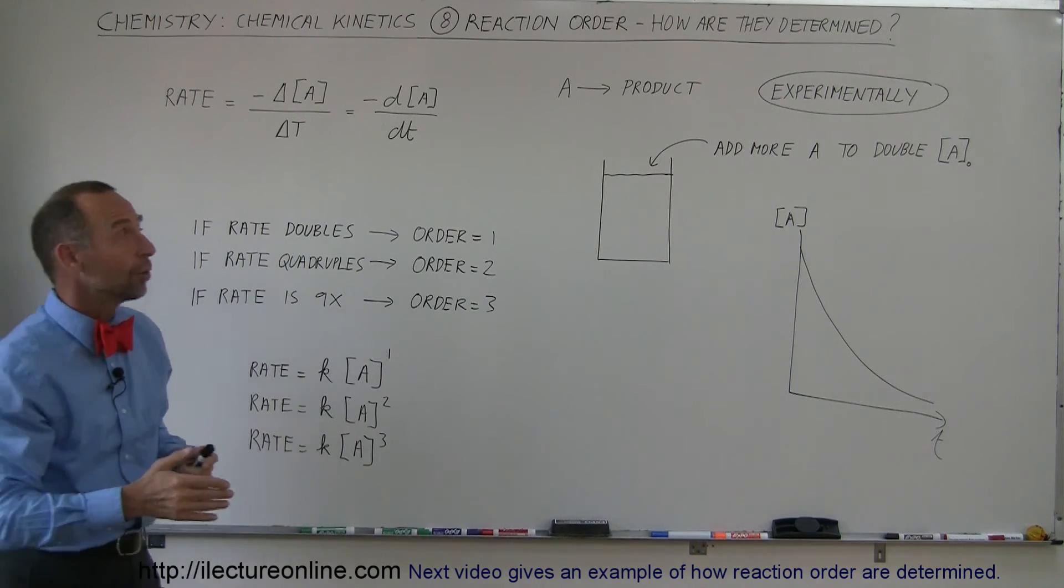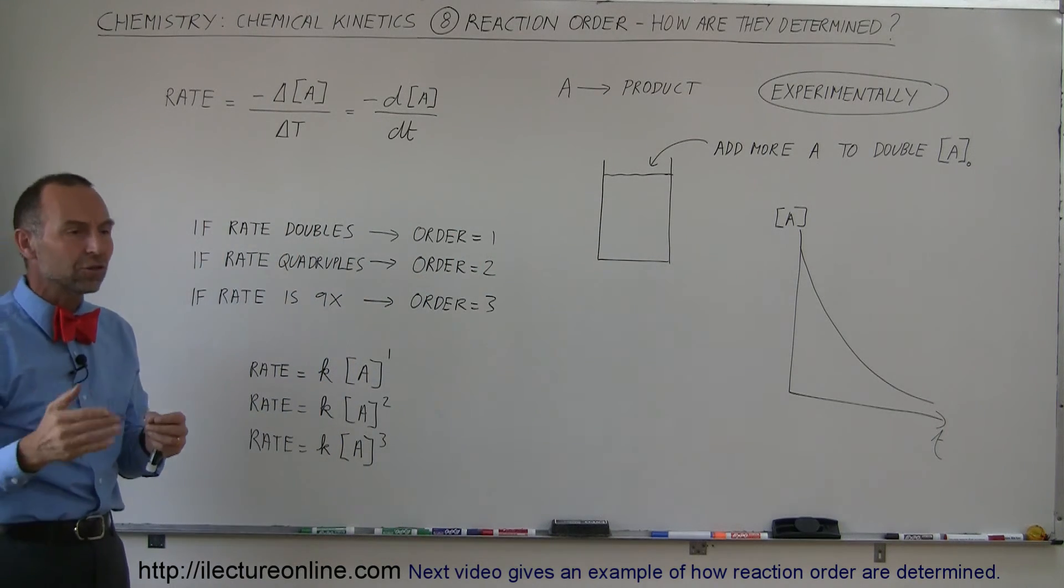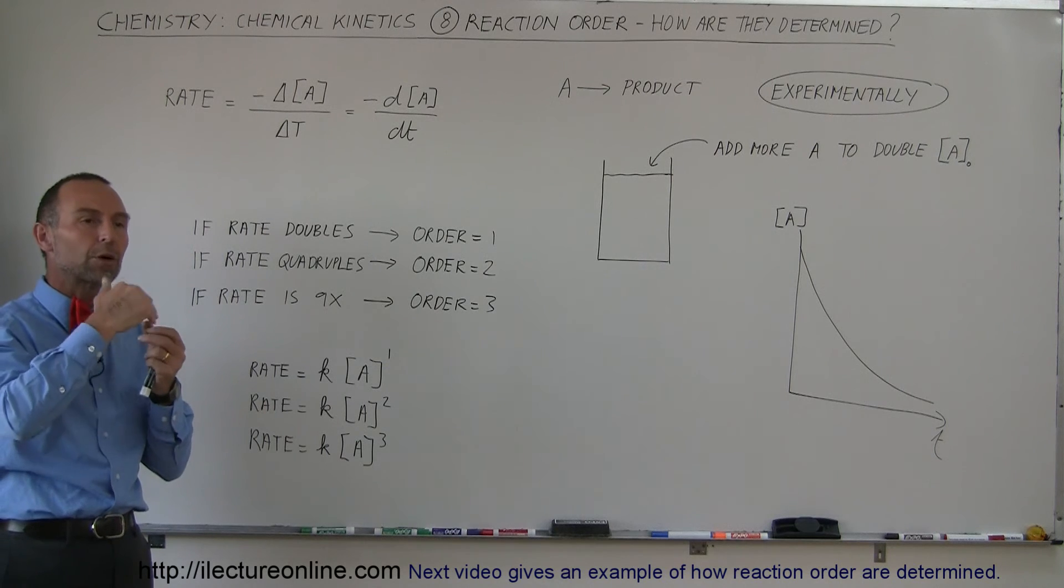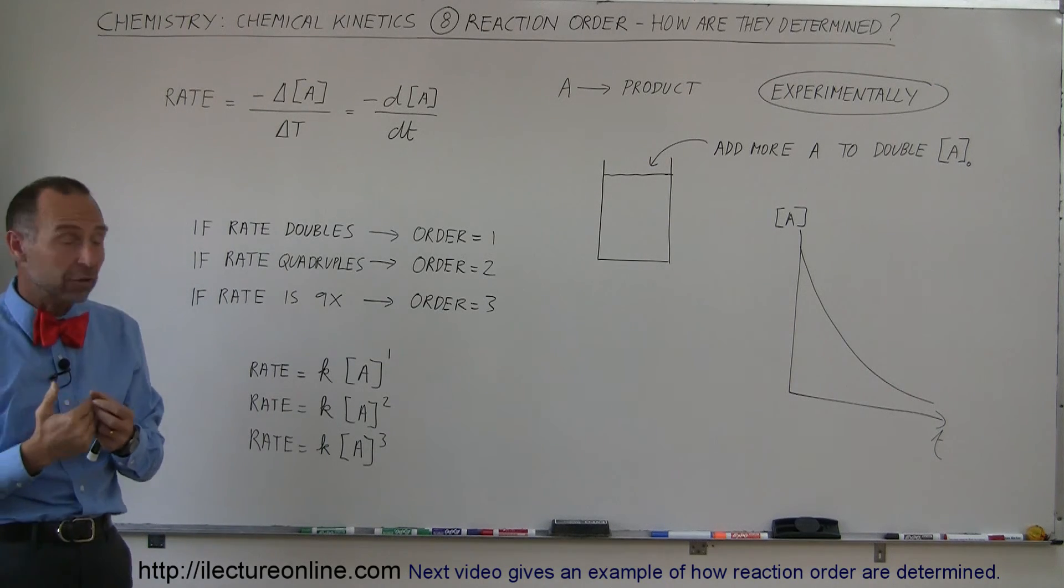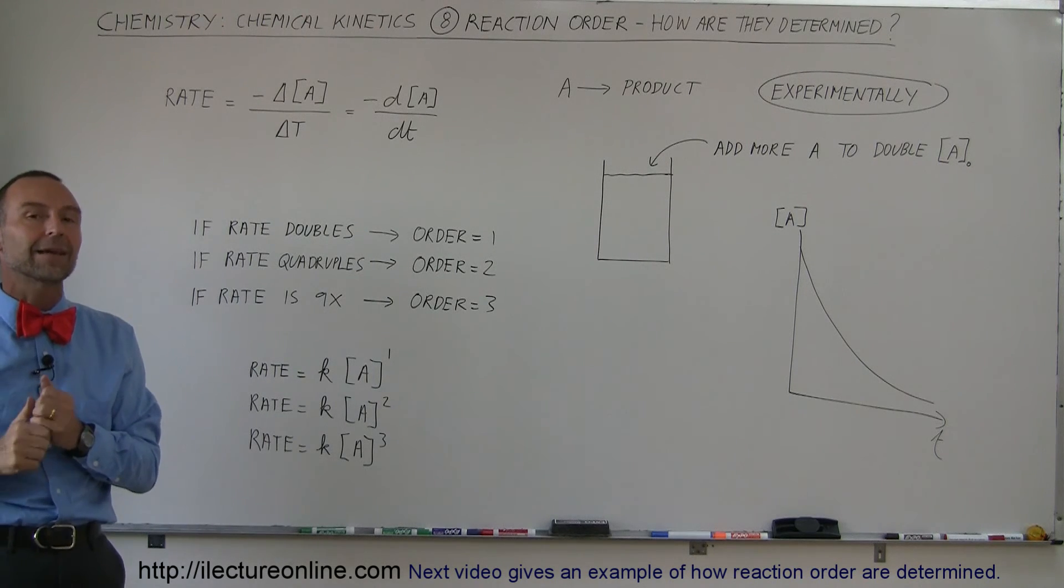Sometimes we have two or three reactants, not just one. How do we handle that? You'll see that we go through a series of experiments, adding or reducing concentration to see how the reaction changes, doing that for one reactant at a time.